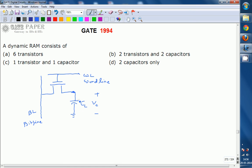This is a single dynamic RAM cell consisting of a MOSFET transistor and a capacitor. A dynamic RAM cell requires one transistor and one capacitor. The right answer is C. Thank you.